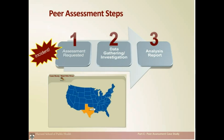In the summer of 2012, the Dallas-Fort Worth area experienced a severe West Nile virus outbreak. Over 1,800 human cases were confirmed and 86 deaths were reported in Texas. We'll apply the three steps of peer assessment to analyze this outbreak, the response, and its challenges.